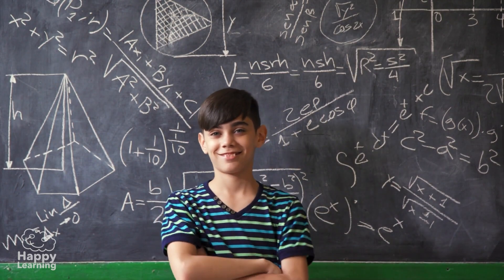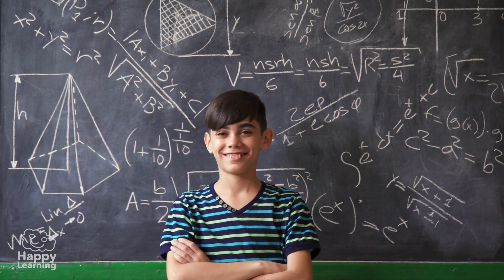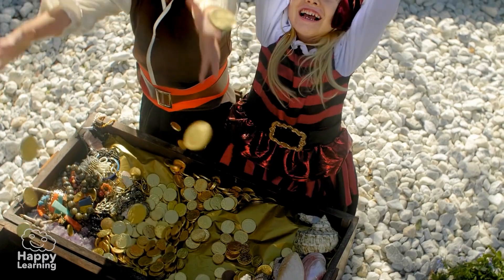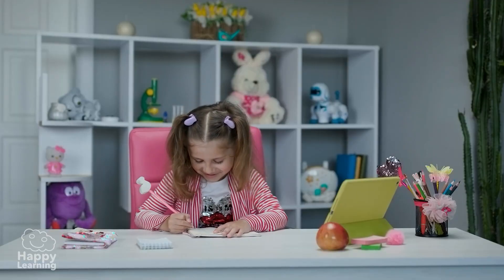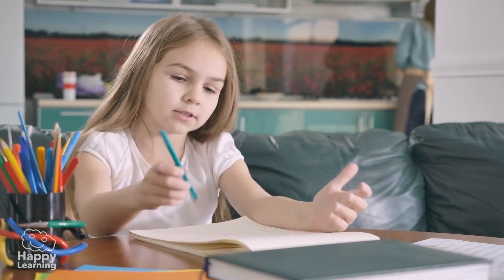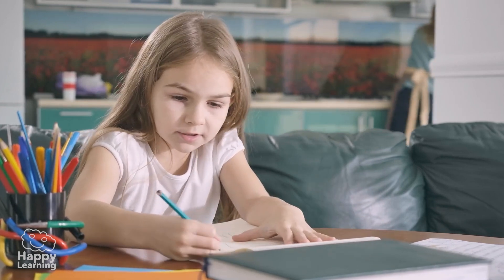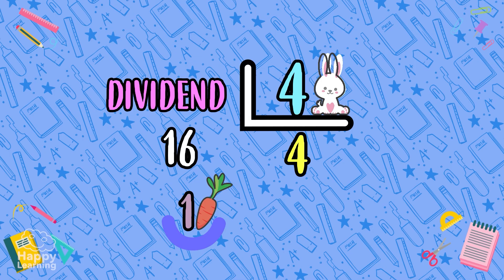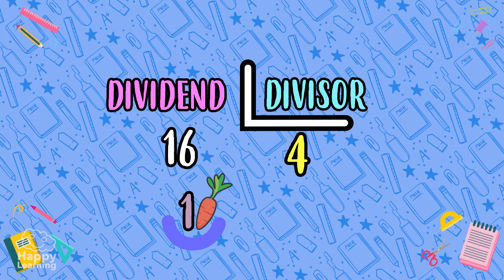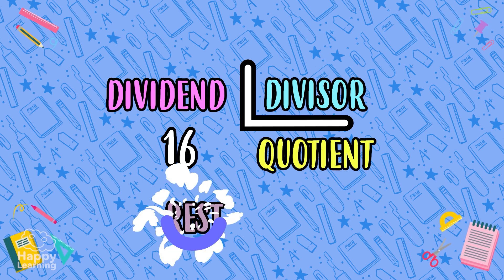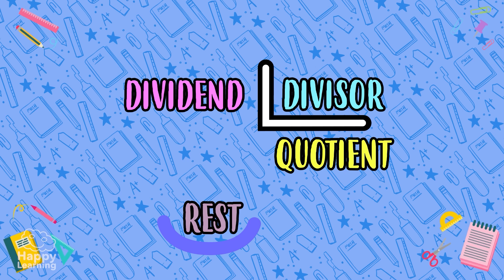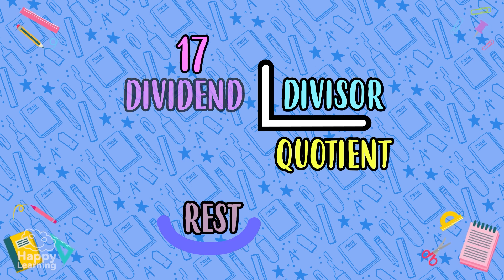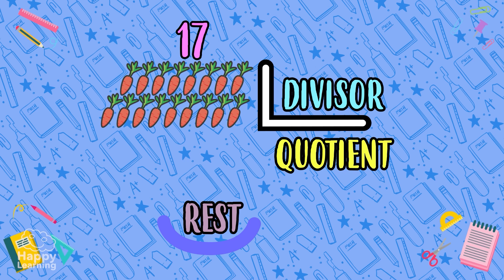Dividing is still really fun and easy, right? We already know what it means to divide and how to do the mathematical equation. Now let's learn the parts of the division: the dividend, the divisor, the quotient, and the remainder. The dividend is the amount that we are going to distribute — in this case it is the number 17, because there are 17 carrots.